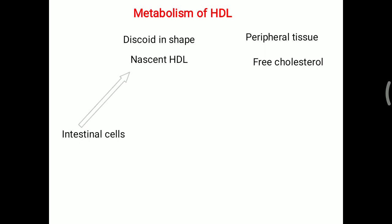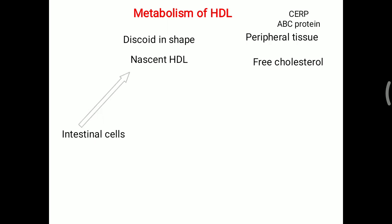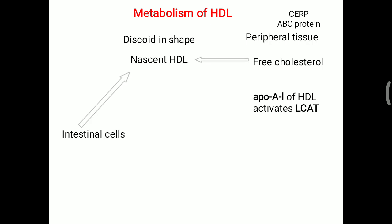For taking up this free cholesterol, a cholesterol efflux regulator protein is needed, which is a type of ATP-binding cassette protein — short form ABC protein. This free cholesterol from the peripheral tissue will go into the nascent HDL. ApoA1, the apolipoprotein present over the HDL, activates one enzyme called LCAT.